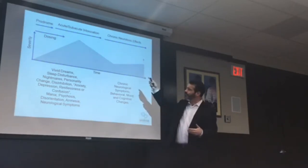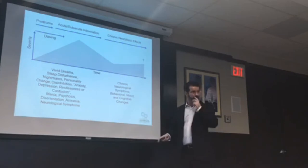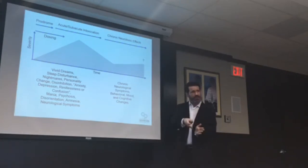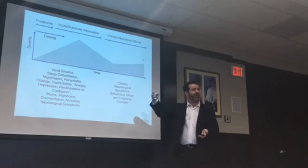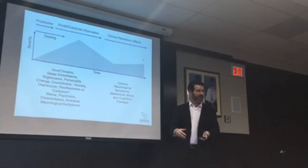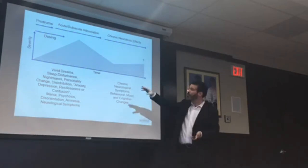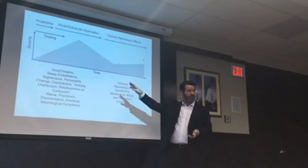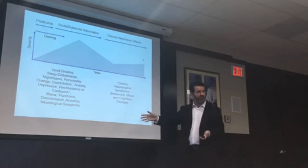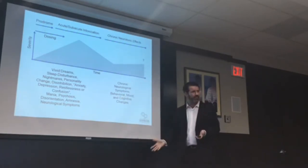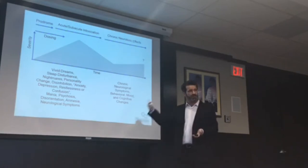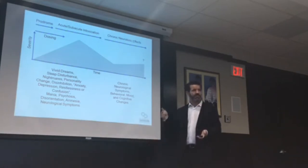The problem is that neurotoxicants exhibit a property called coasting — meaning if you stop the exposure, it's possible the severity of symptoms will continue to worsen over time because the toxicant is still making its way into the brain. It's lipid soluble — it's not leaving anytime soon. The toxic injury will build upon itself, so the injury could get worse even after discontinuing the drug. The damage that's already been done is not going away.